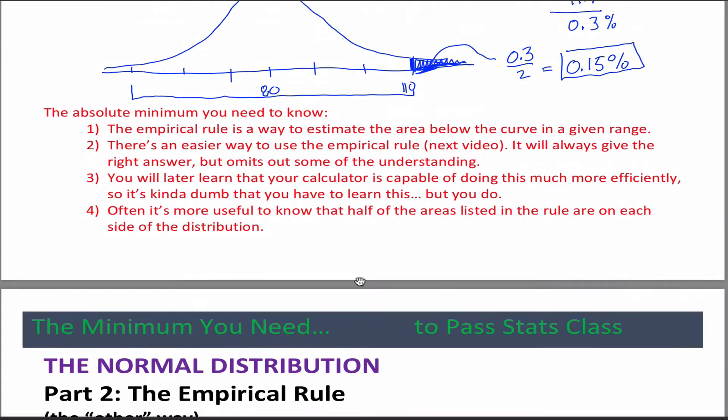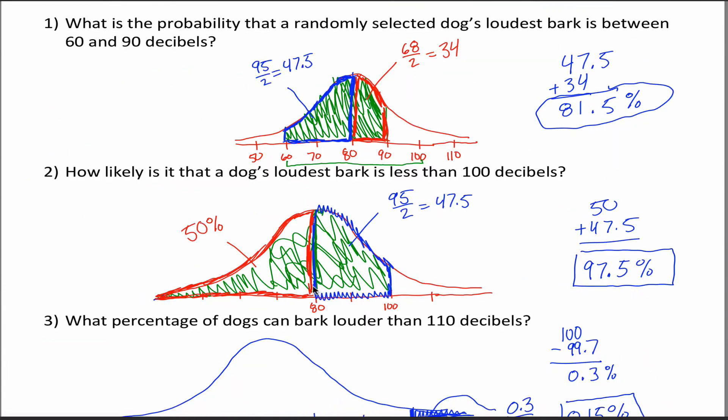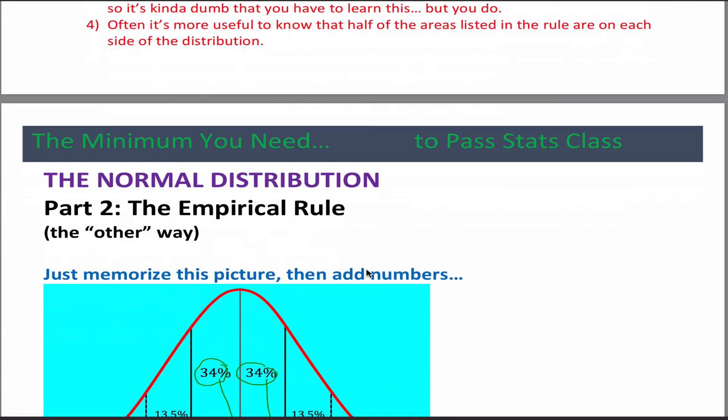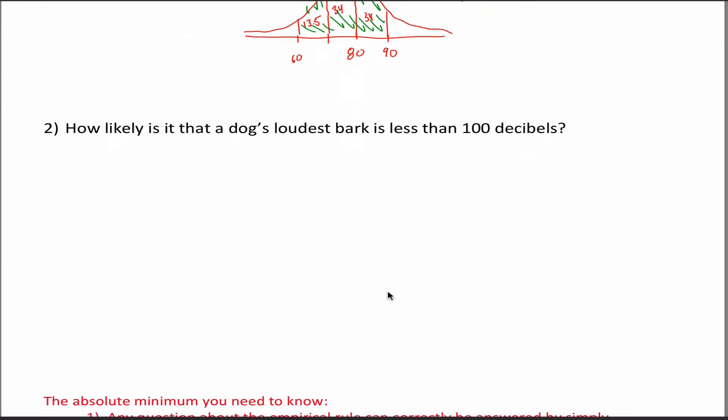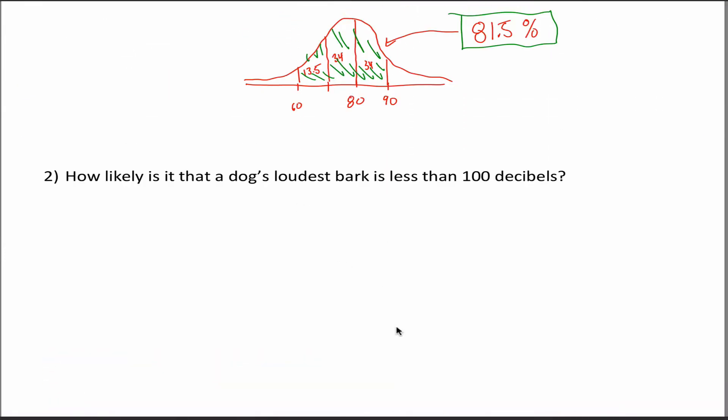Don't believe me? See if we can find that problem. Here it is. Remember when you had to take this and this and add those together? We had to divide this by two, and yeah, you got 81.5. You got the same answer. Maybe it's easier to do them this way. So here's another way you can do these. One last problem, and I'll call this video good. How likely is it that the dog's loudest bark is less than 100 decibels?